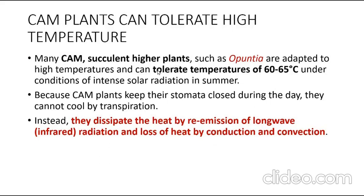CAM plants such as succulent higher plants like Opuntia are able to adapt to high temperatures and can tolerate 60 to 65 degrees centigrade under intense solar radiation. These CAM plants keep their stomata closed during the day, so they cannot show the transpiration process, which normally provides a cooling effect. Instead, they dissipate heat by re-emission of long-wave radiation and loss of heat by conduction and convection.